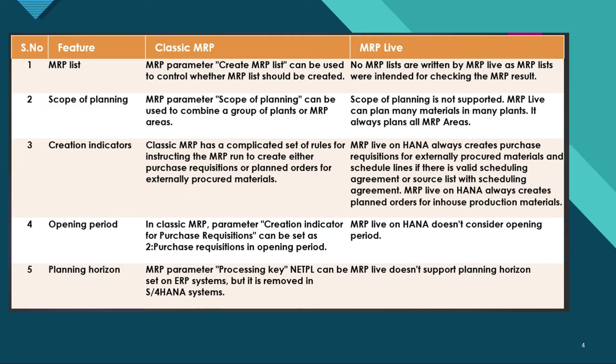For creation indicators: classical MRP has a complicated set of rules for instructing the MRP run to create a purchase requisition or planned order for externally procured materials. Whereas MRP Live always creates a purchase requisition for externally procured materials and schedule lines if there is a valid schedule agreement or source list.